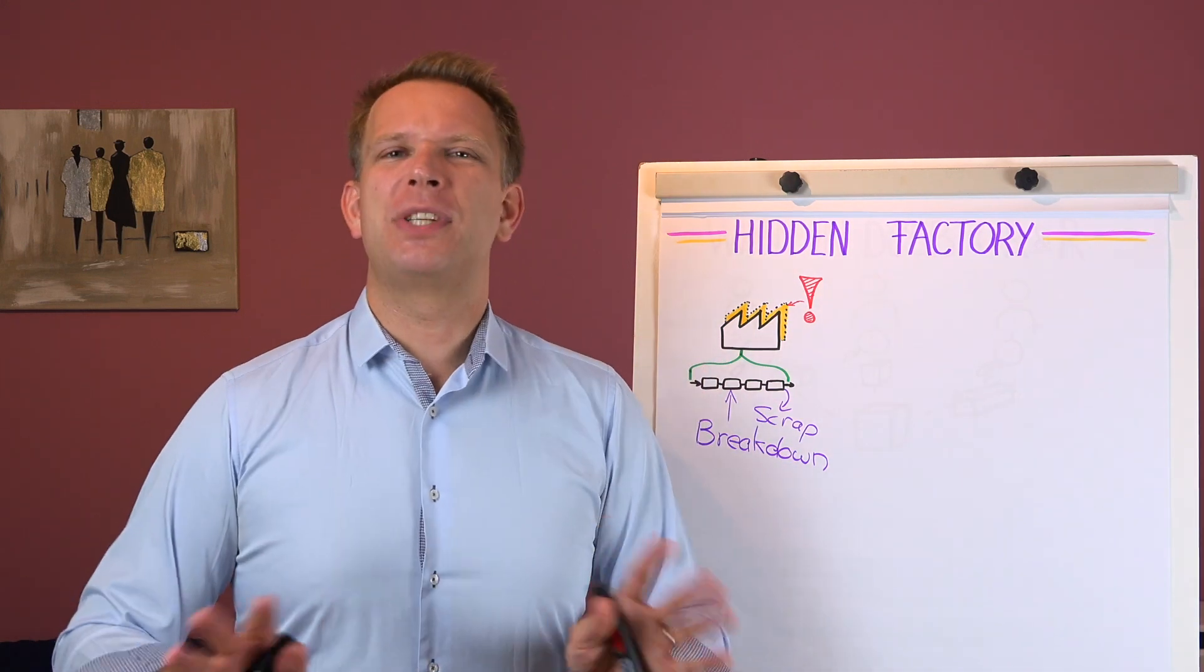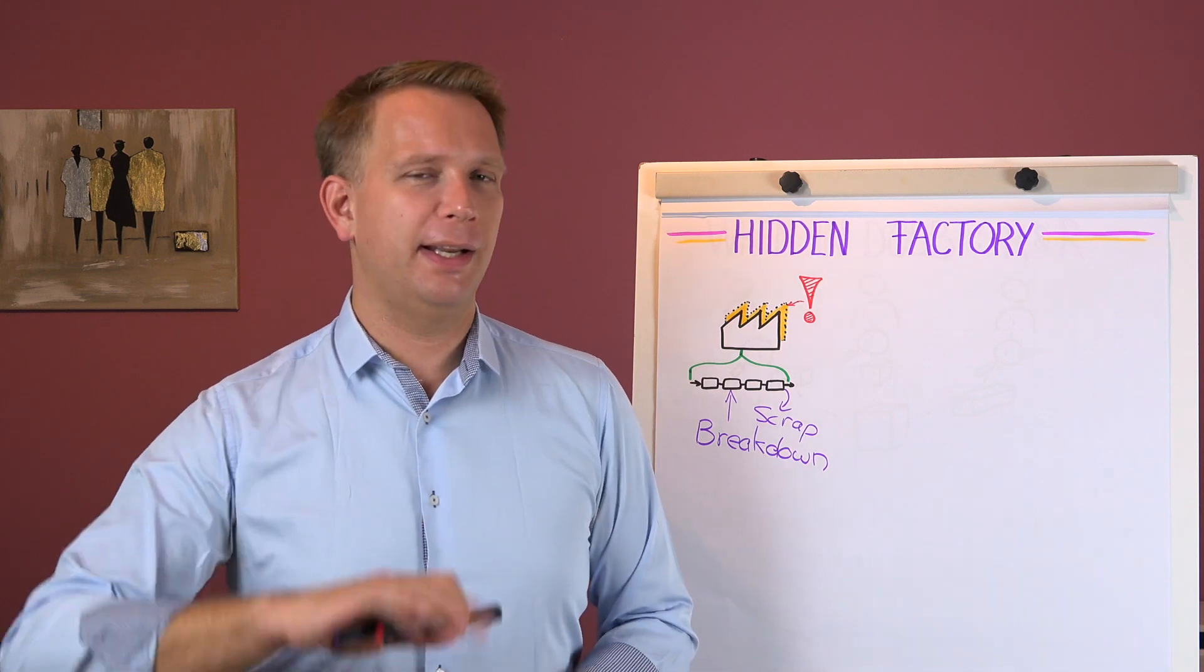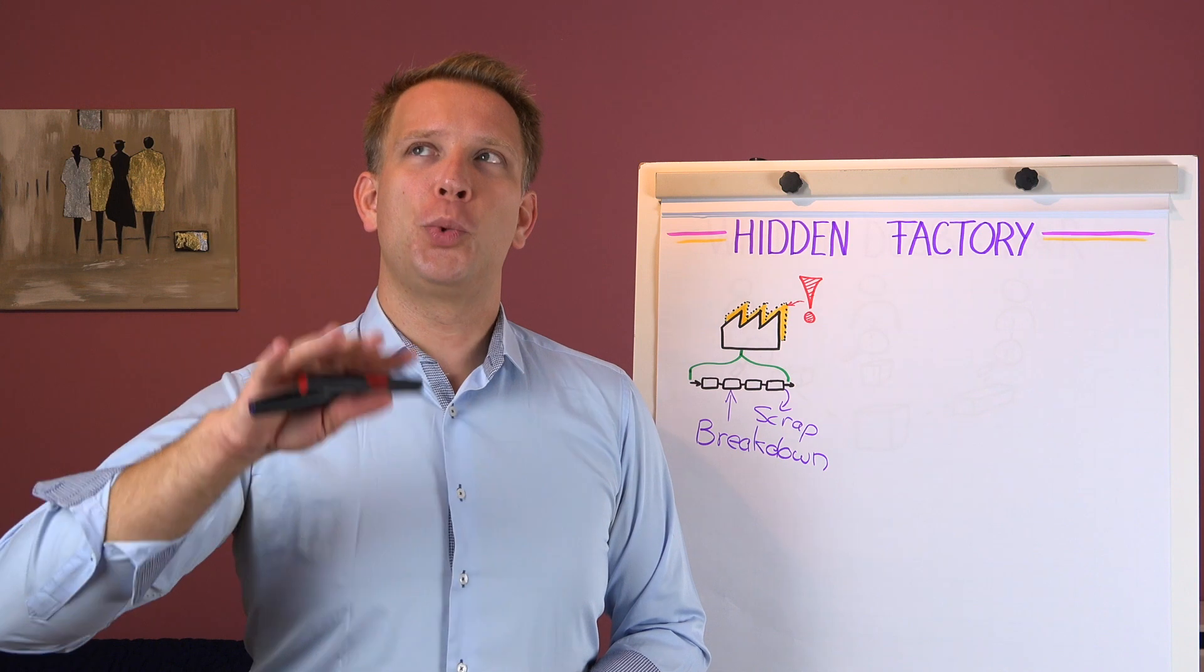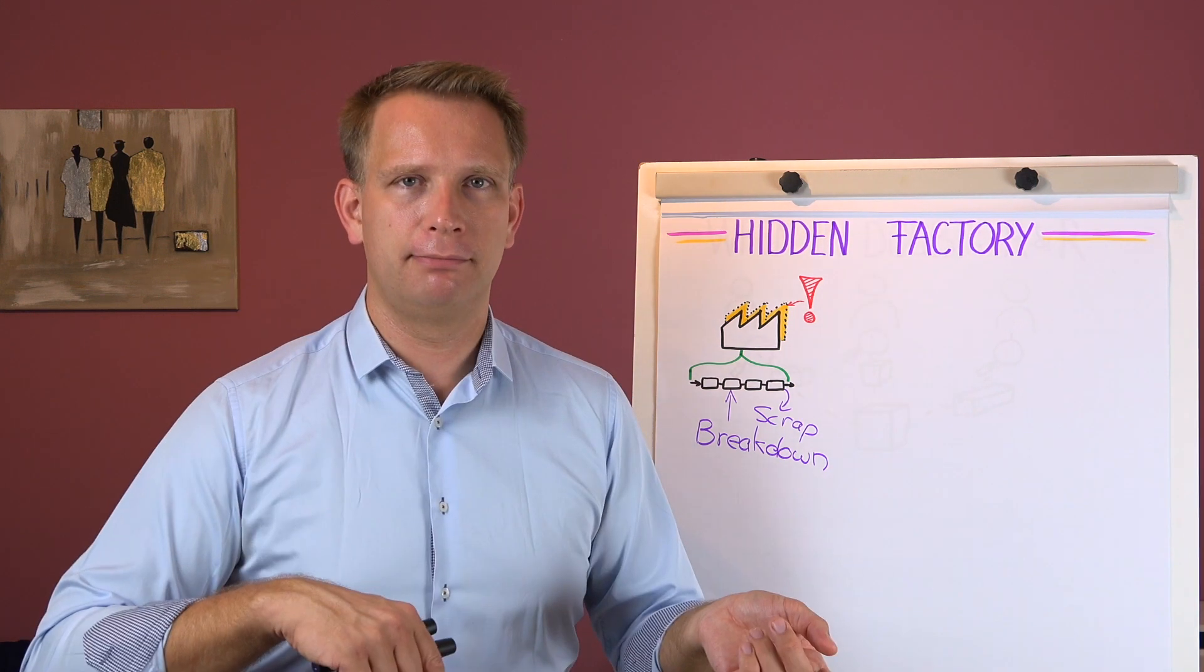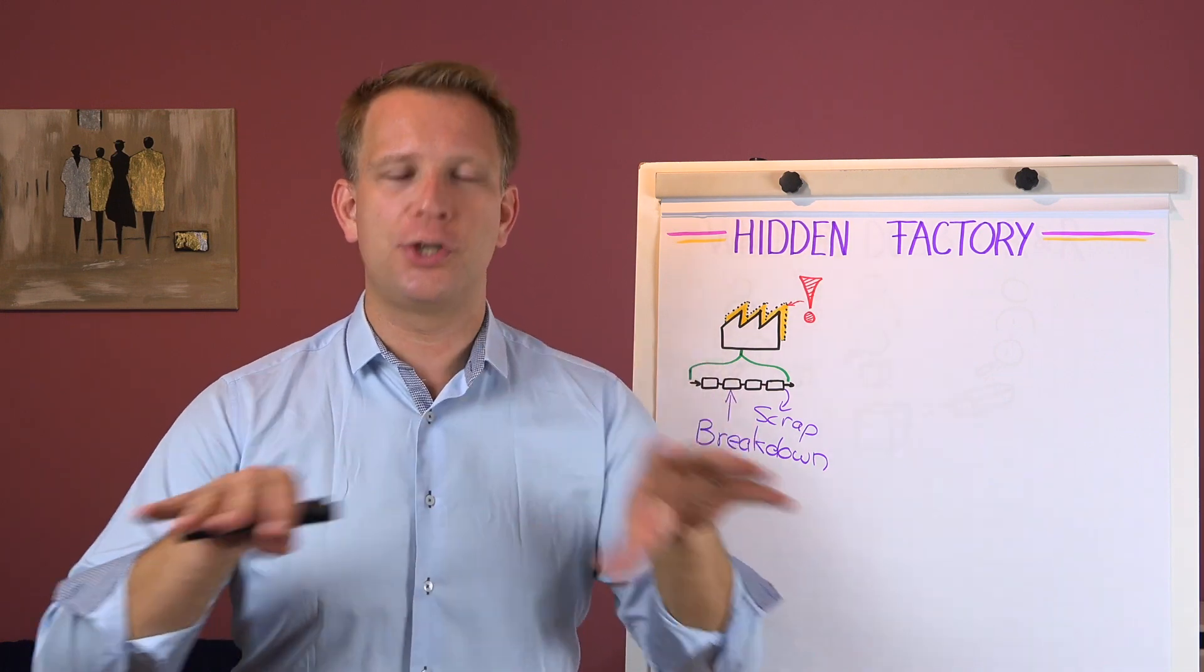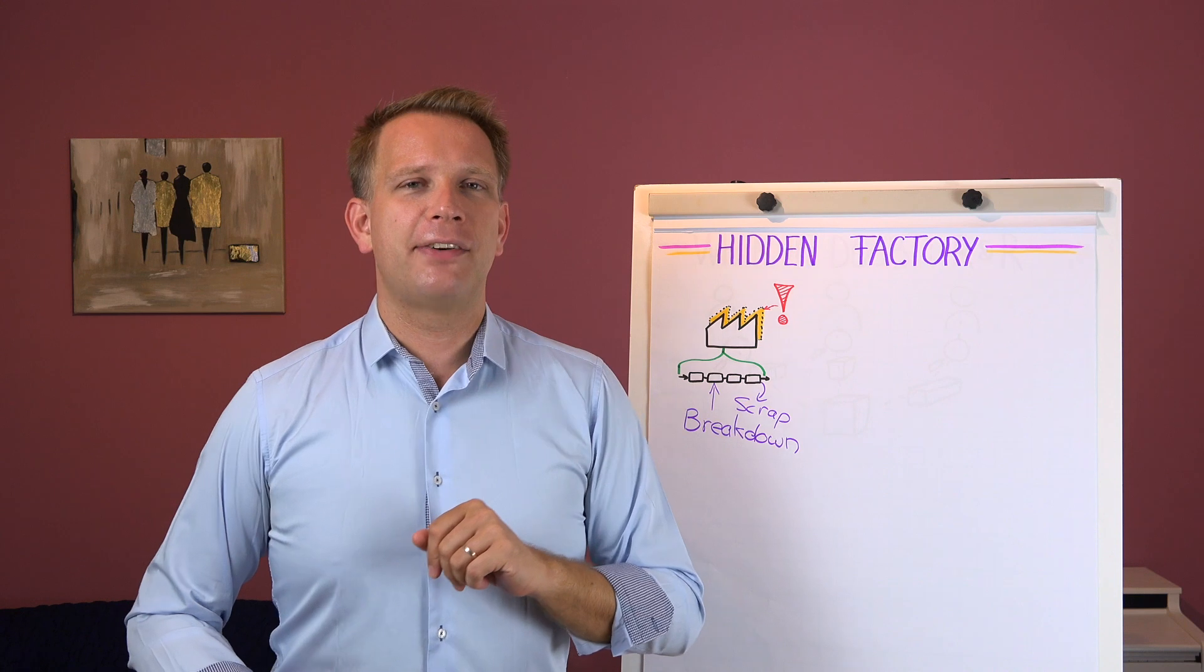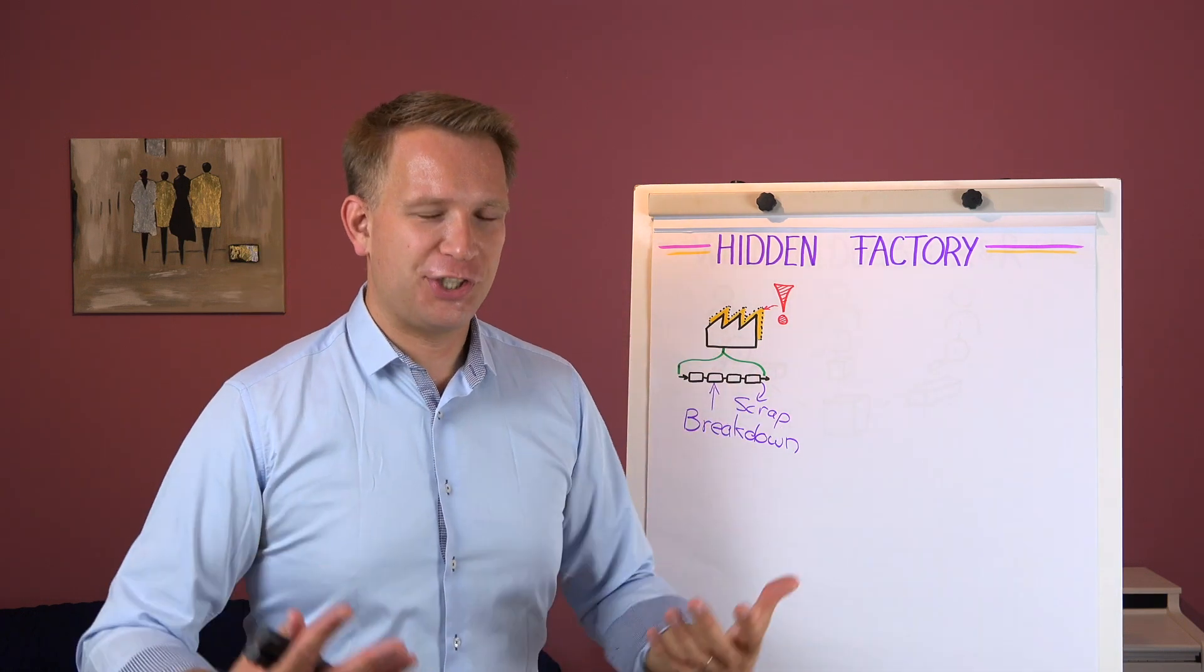For instance, we're scrapping part of our good production or the line broke down. We've got an OEE loss, we've got material loss. These things are pretty visible. It's a bit of a discussion—are they in the hidden factory or not? I would say they're not really in the hidden factory, but we will be on the border here.